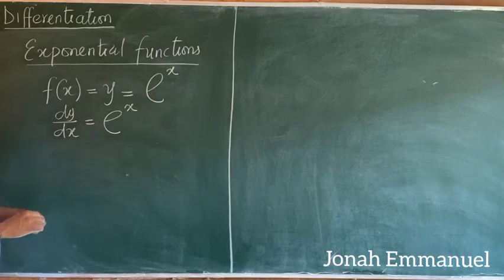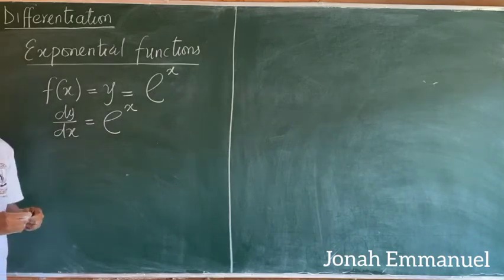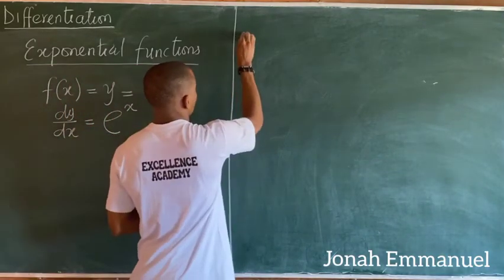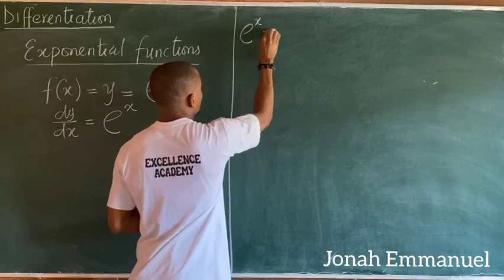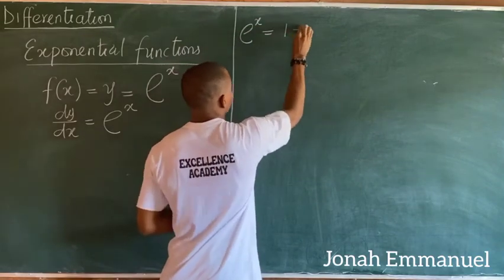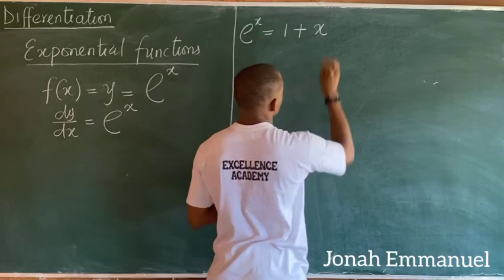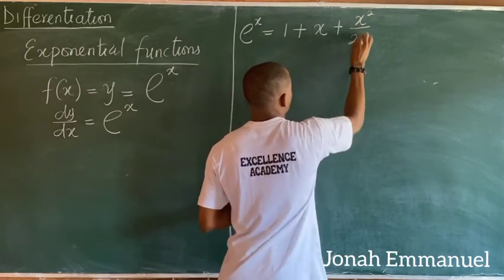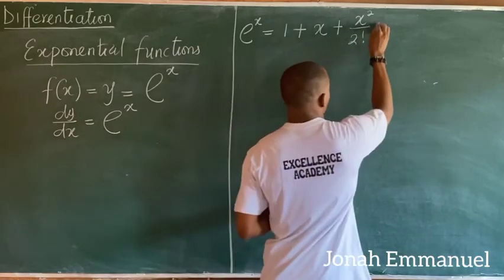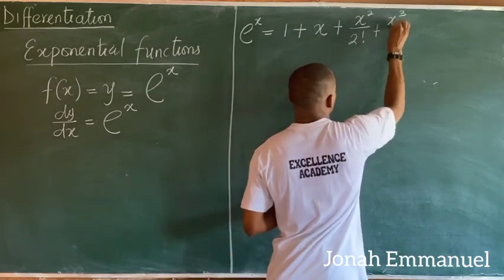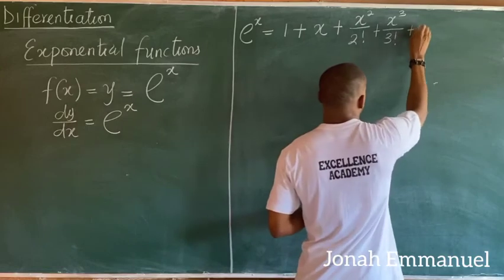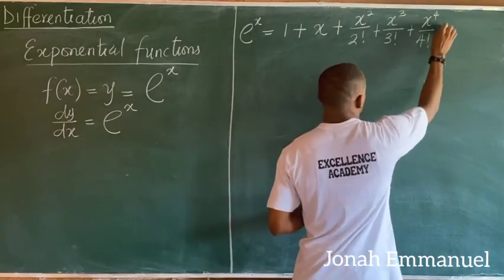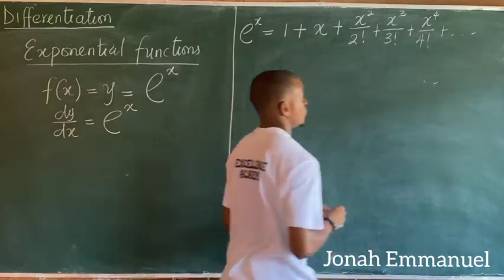This can be proved using the series expansion method. From the series expansion method, e^x is equal to 1 plus x plus x² over 2 factorial plus x³ over 3 factorial plus x⁴ over 4 factorial, and it goes on.